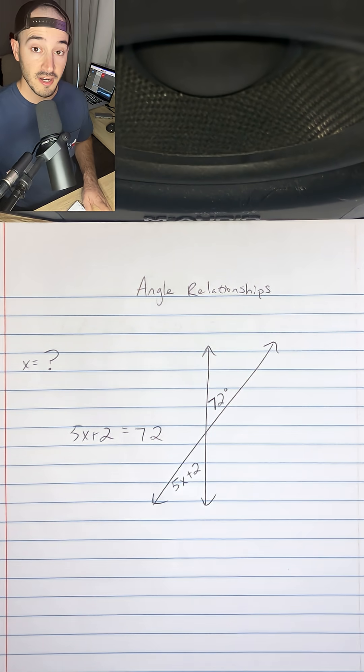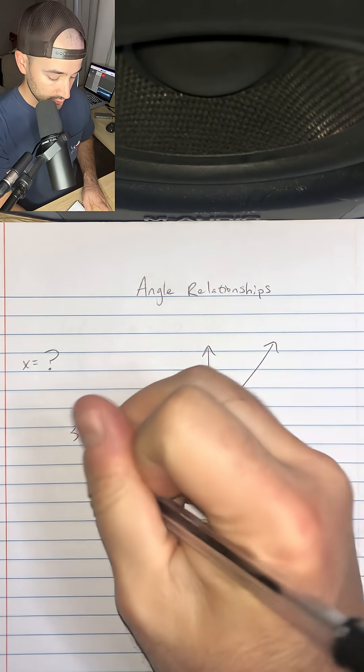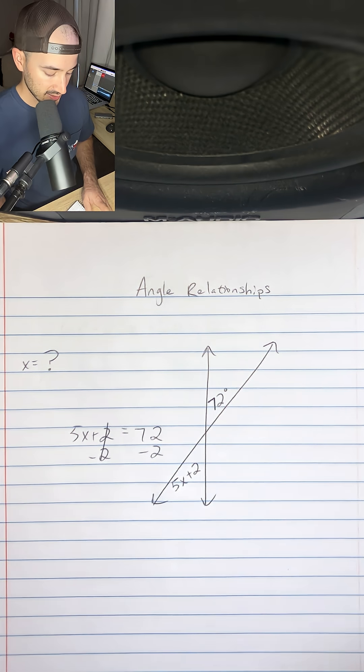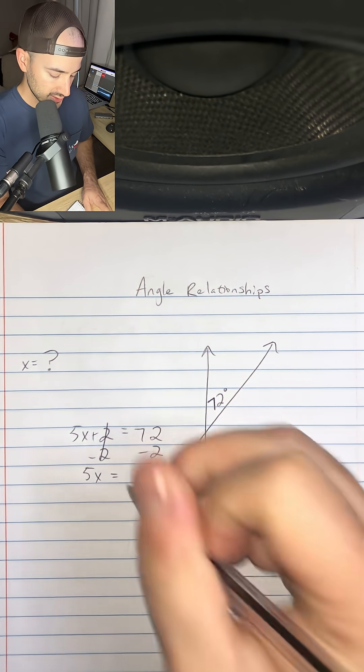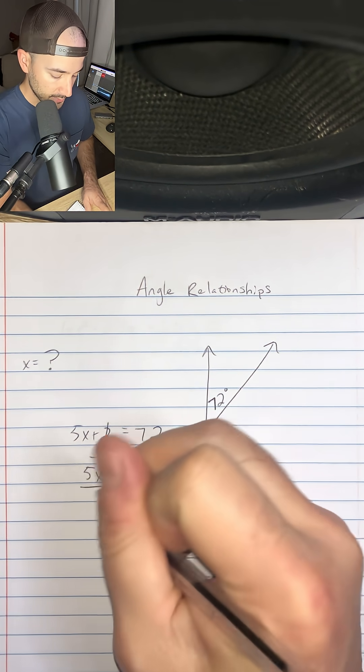And then from there we're just going to solve for x. So we're going to subtract 2 from both sides to get 5x is equal to 72 minus 2, which is 70, and then we can divide by 5 on both sides.